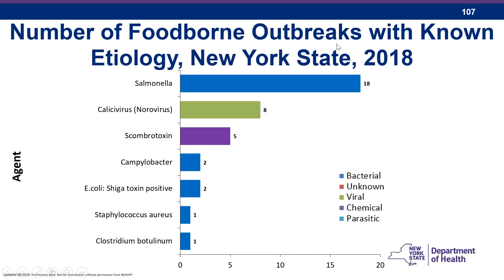In 2018, salmonella was the most common agent identified, followed by norovirus and scombrotoxin. A lot of the salmonella outbreaks involved multi-state situations with more than one state involved. We're also seeing a number of different ready-to-eat foods coming in contaminated, which you can notice with the many recalls happening, and our whole genome sequencing data identifies that our cases are associated with those types of products.